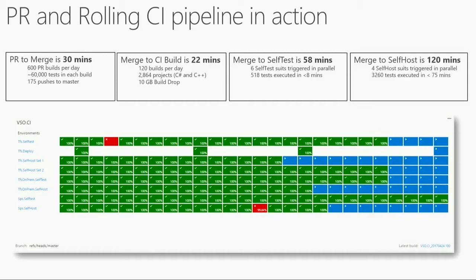PR to merge today takes about 30 minutes. We run about 60,000 tests in the PR and do about 600 PR builds a day. Merge to CI is about 22 minutes across about 3,000 projects. Merge to self-test — the first test suite running all our P0 runs — takes about 58 minutes, so within an hour you get an answer on your commit for P0 runs. Within two hours, you get the answer whether it passed all our tests. Whereas in the past you had to wait two days and still couldn't get a reliable signal, now within two hours you know your change is good — giving you tremendous confidence to keep pushing changes through the system.